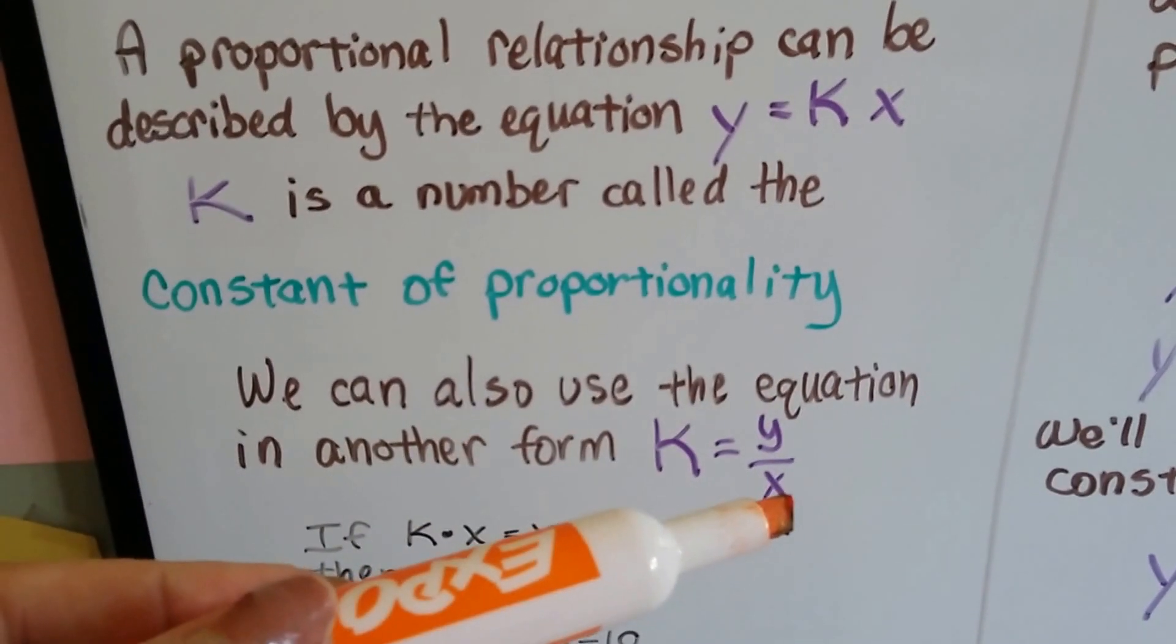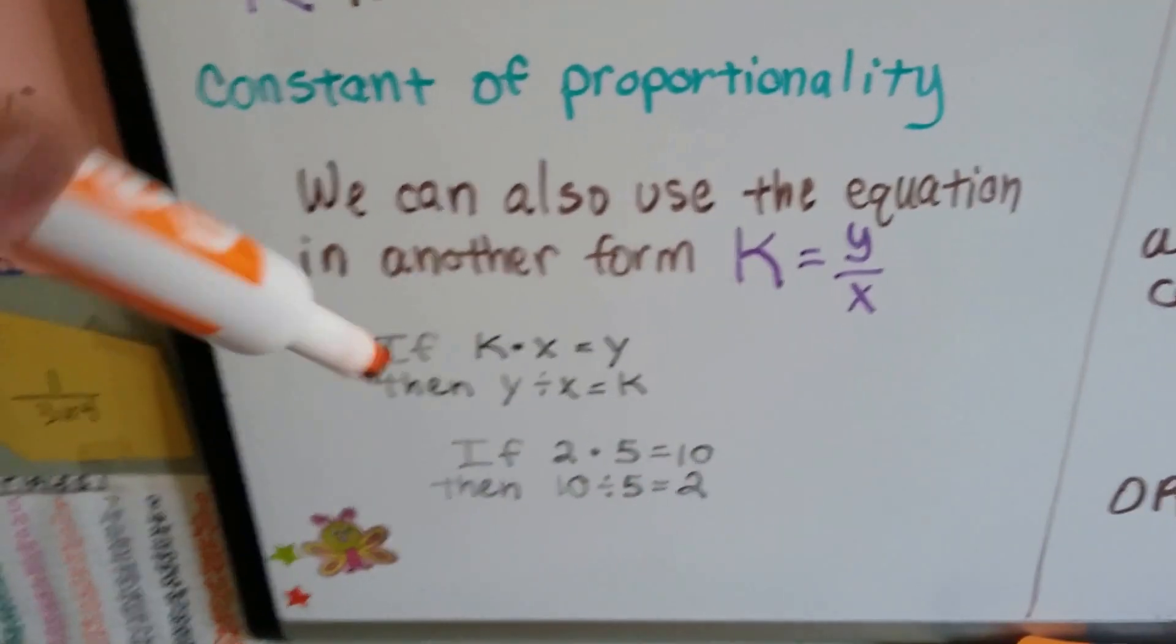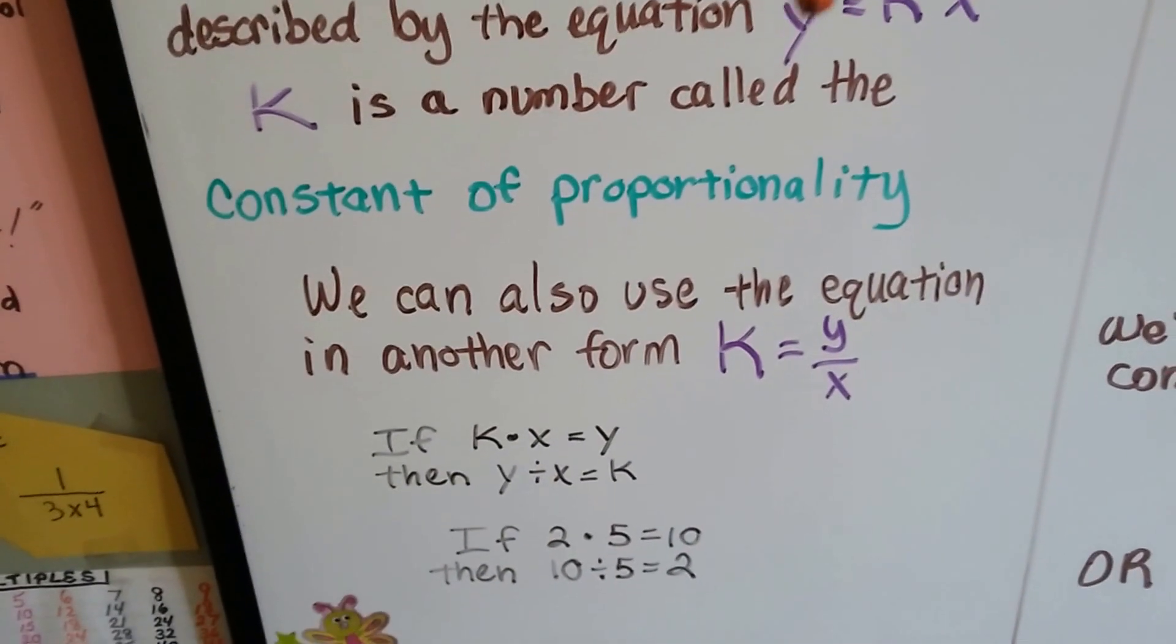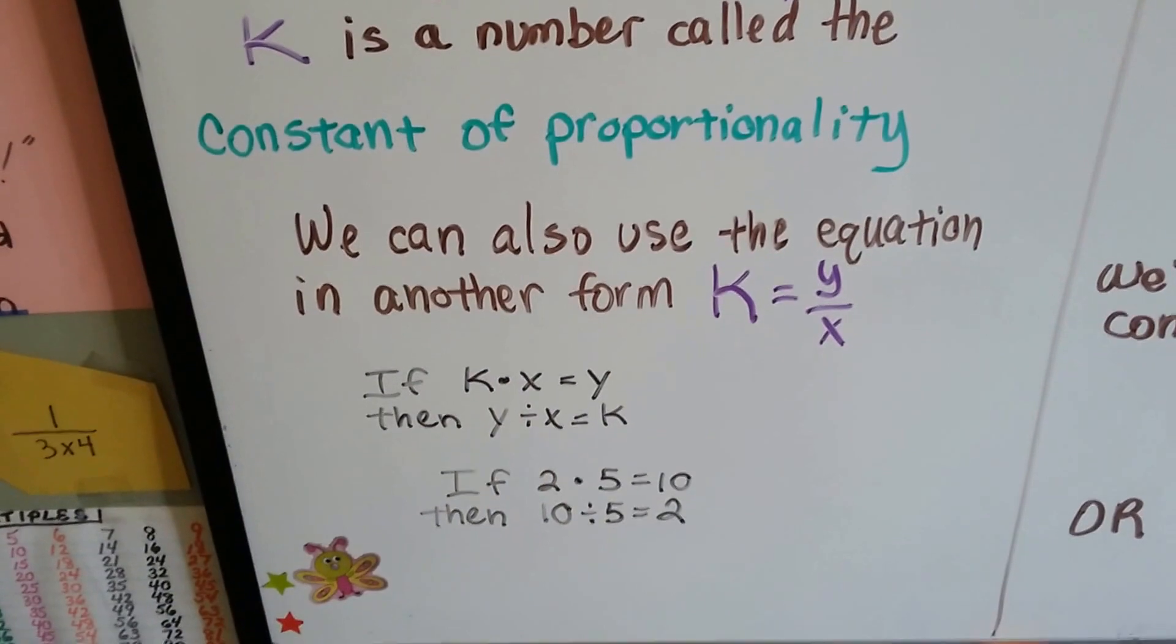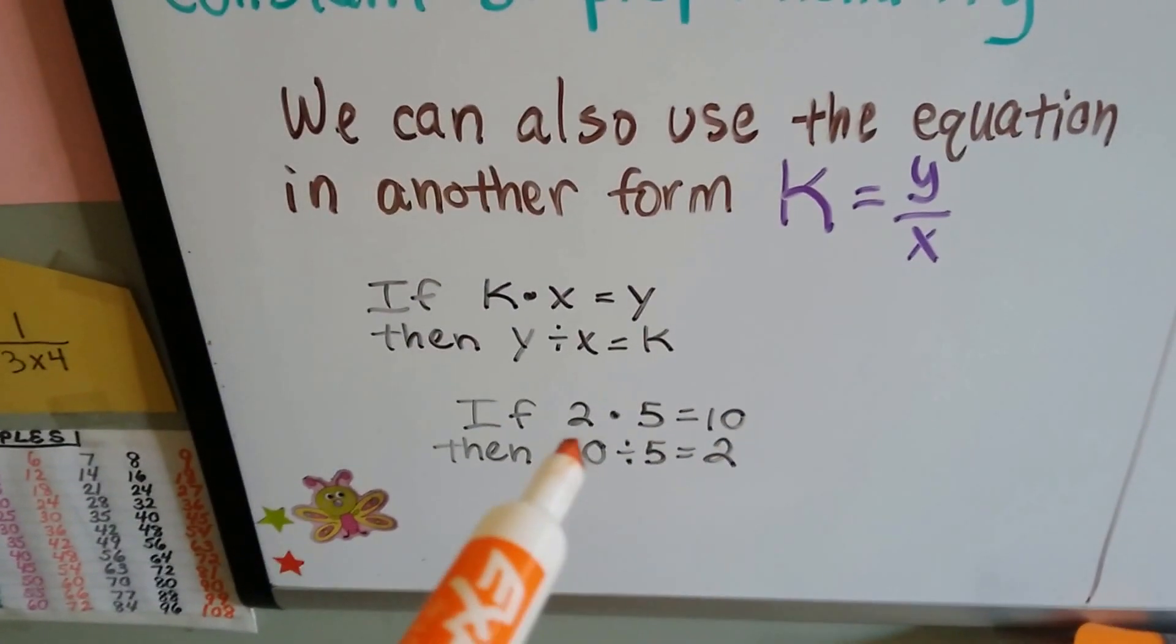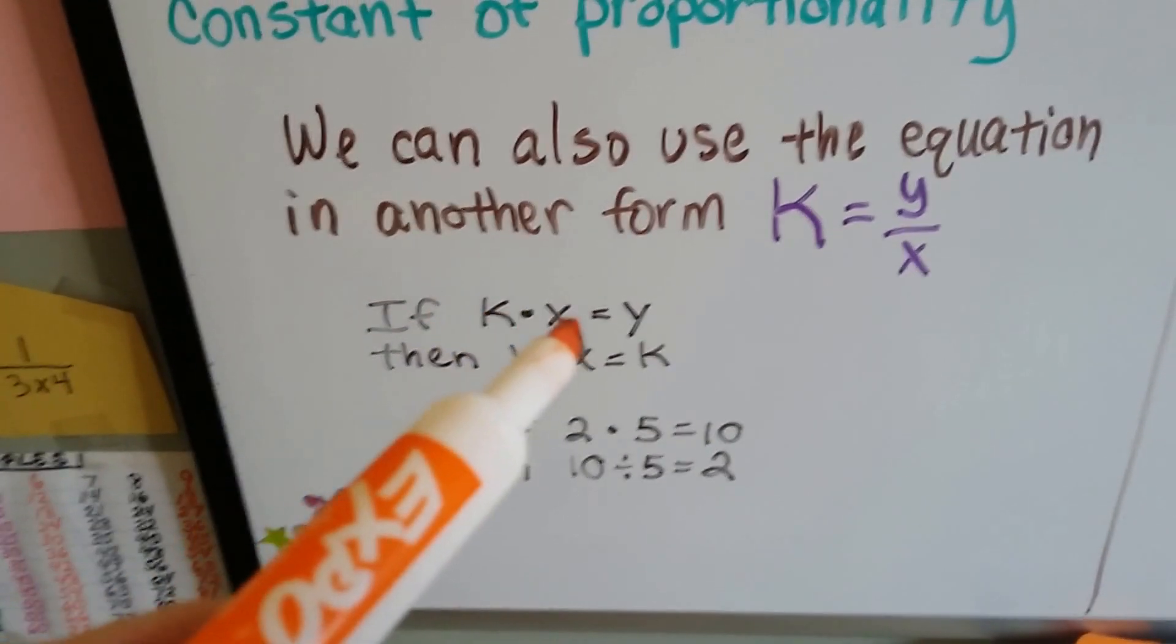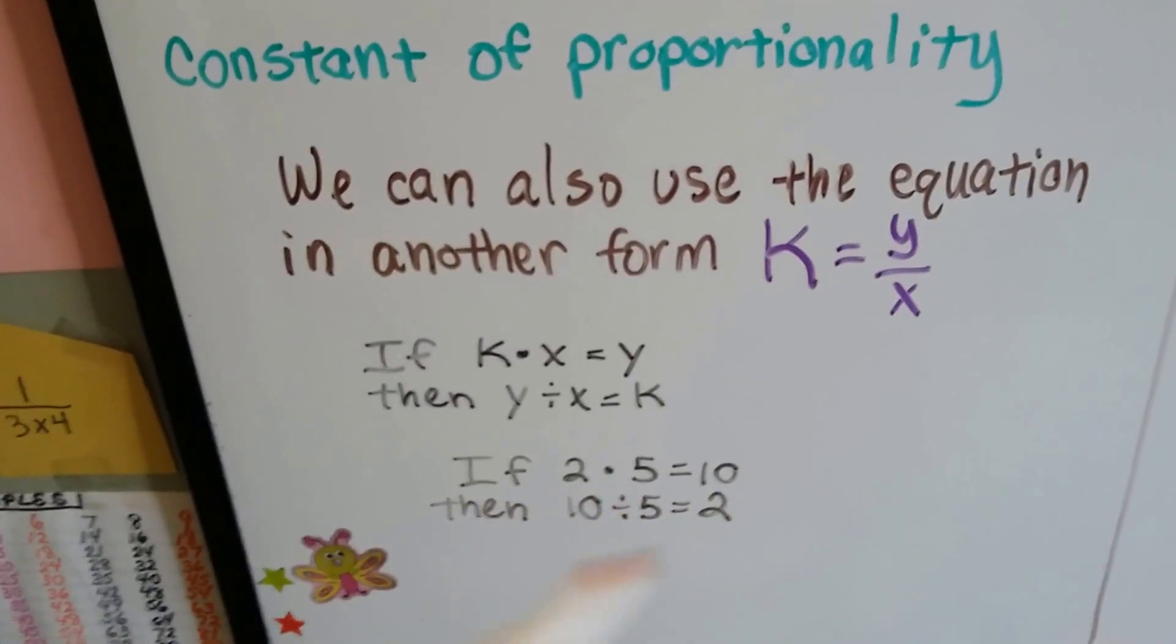Now, the reason the y got put over the x and the k got put on the other side of the equal sign is, if k times x is equal to y, right here, then y divided by x is going to equal k. It's like, if 2 times 5 equals 10, then 10 divided by 5 equals 2. See? If k times x equals y, then y divided by x equals k. See, it's just the inverse, isn't it?